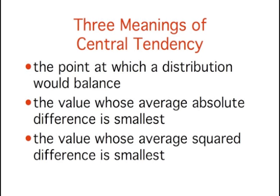The second definition is the value whose average absolute difference from all the other values is smallest. The third is the value whose average squared difference from all the other values is smallest.